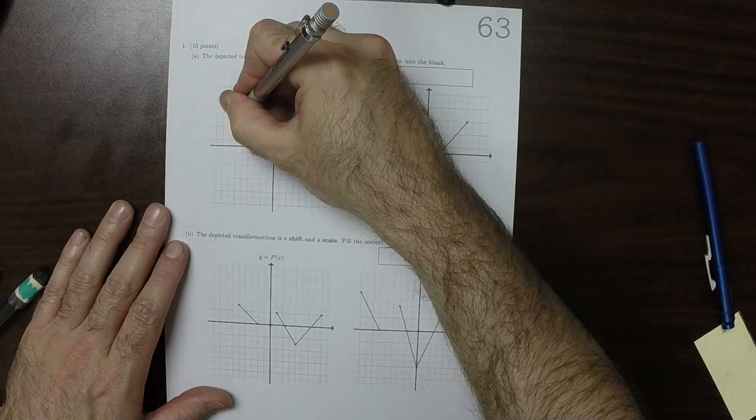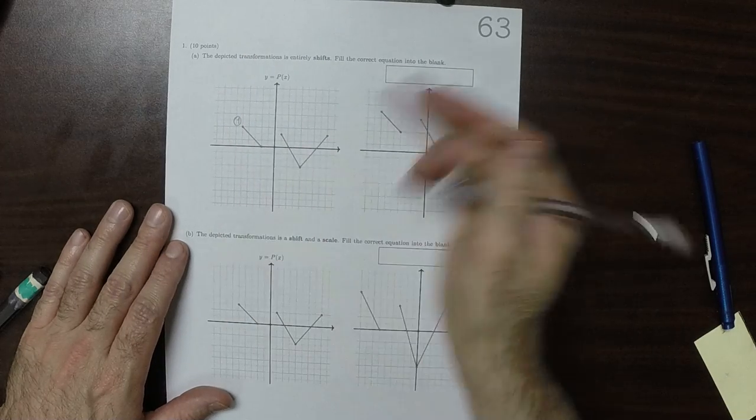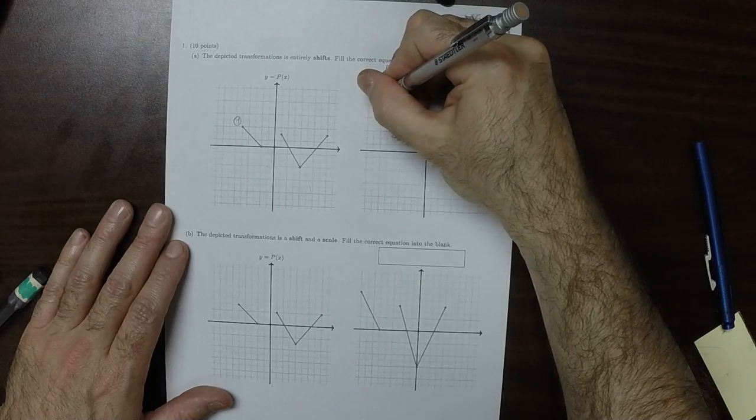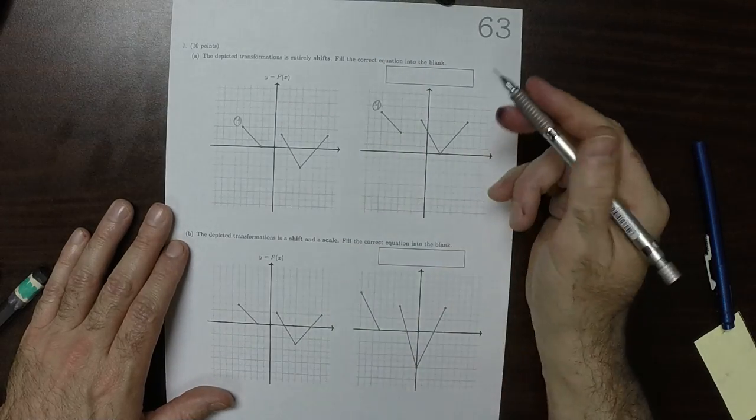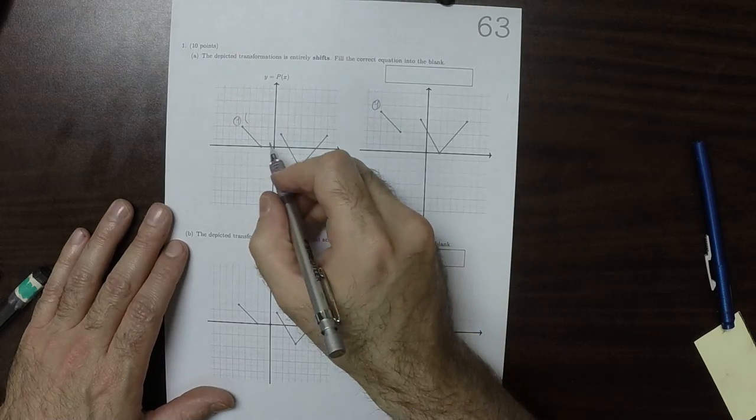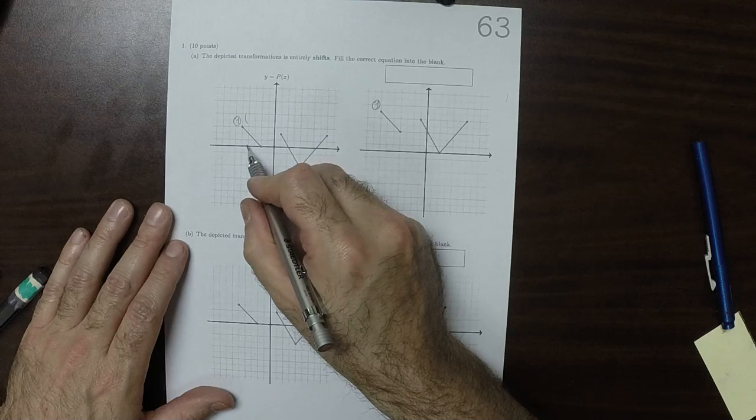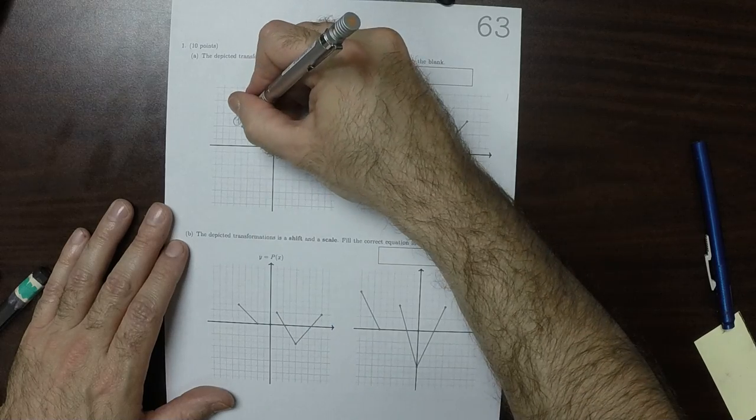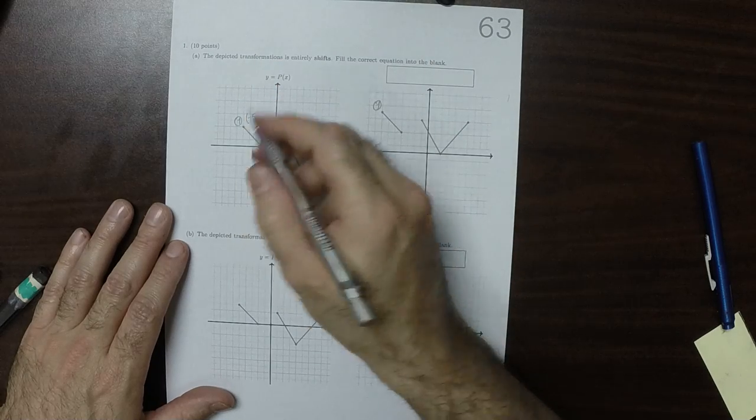So if I call this point 1, then just comparing, this must be the transformed point 1. So let's look. This point 1 is at position negative 5, and then 3.